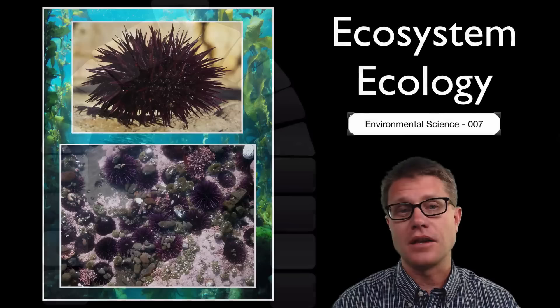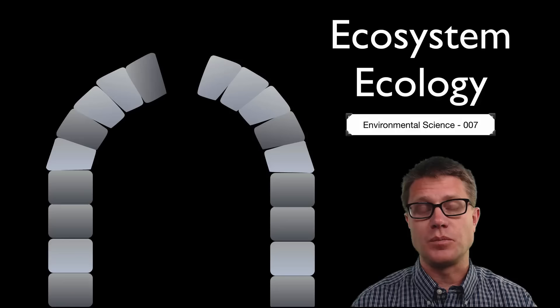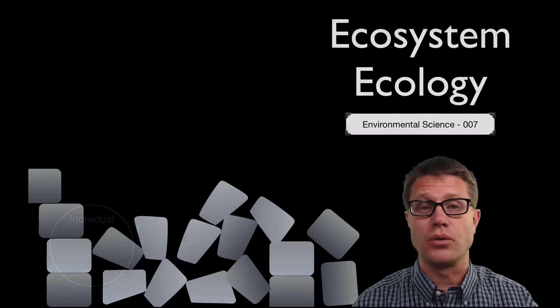We like to think of the otter as a keystone species. Just like on this arch, this keystone at the top holds everything else in place. You can think of each of these stones as a different species. If we remove that keystone species then the whole thing folds in on itself. In other words, some species are actually more important than others.